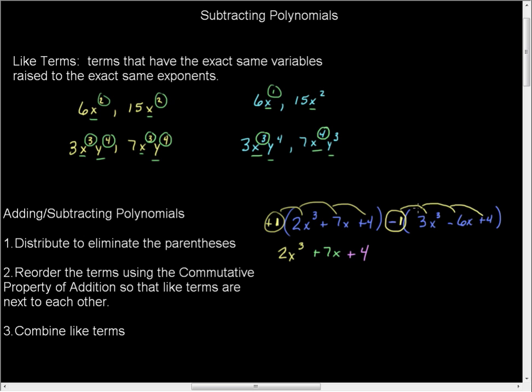So we have negative times a positive is a negative 3. A negative 3x³. A negative 1 times a negative 6 is a positive 6x. And then a negative 1 times a positive 4 is a negative 4.